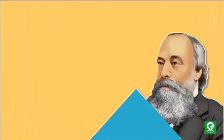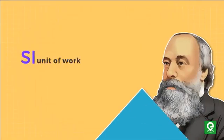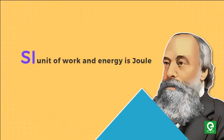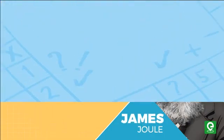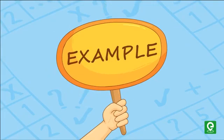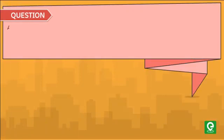The SI unit of work and energy is the joule, named after the English physicist James Joule. One joule is equal to one newton meter. Let's solve an example to understand the method of calculating work.